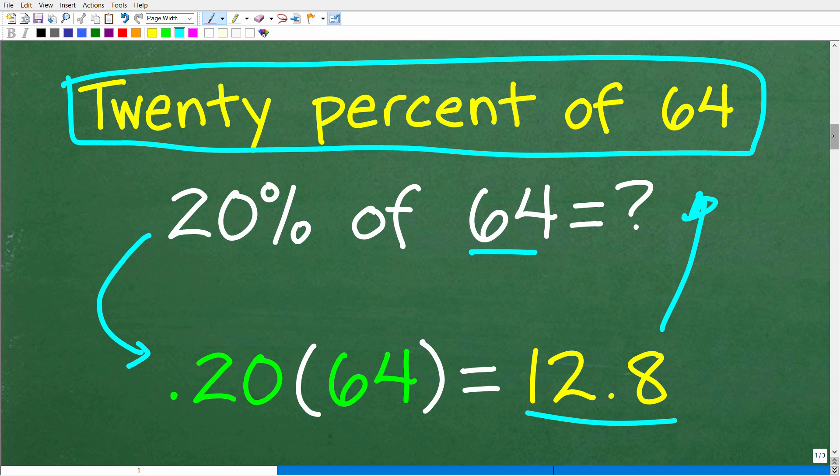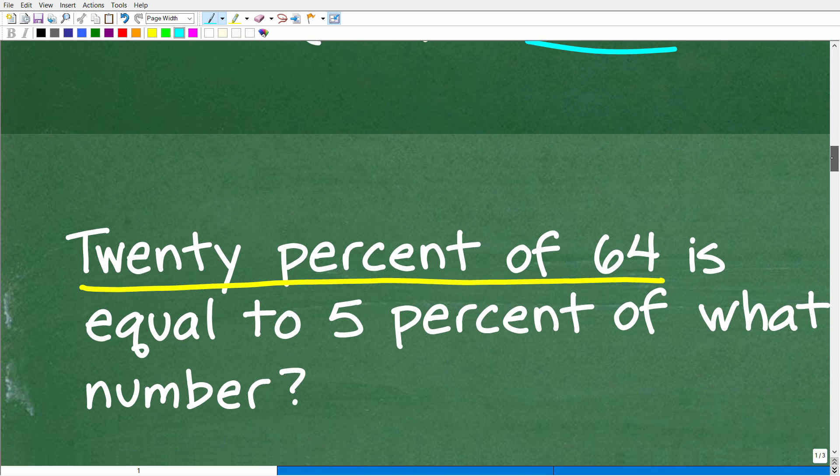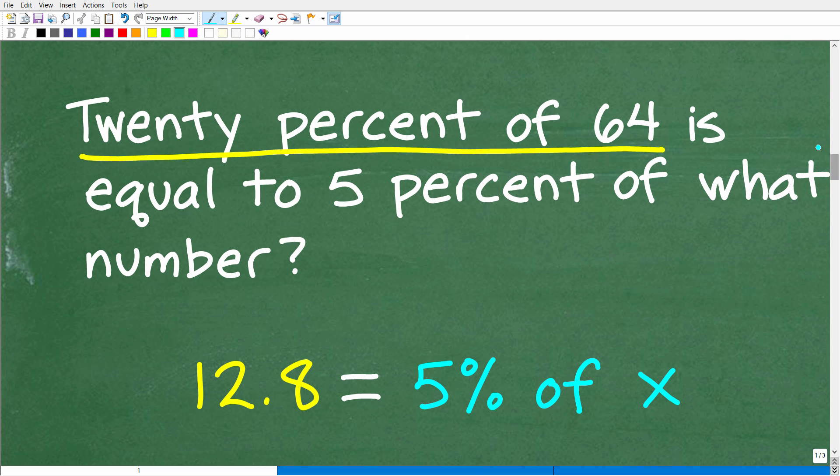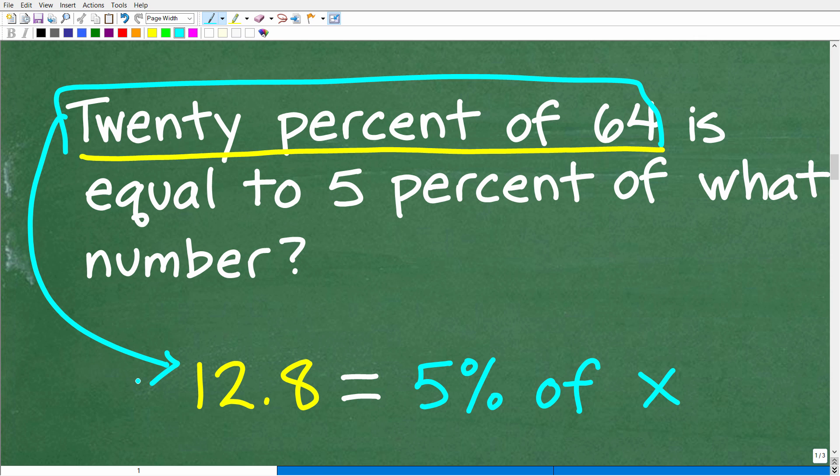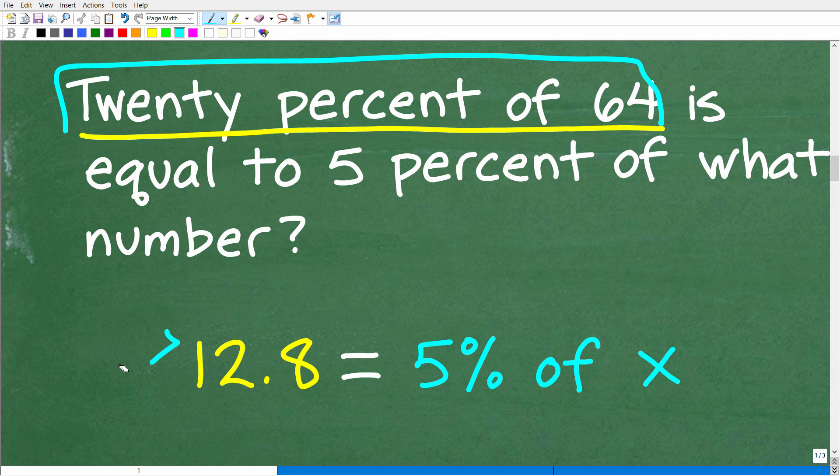So this part of the problem, 20% of 64, we can just get rid of that and put in 12.8. We're going to approach this problem one segment at a time. Now let's take a look at the problem. We have 20% of 64 and now we know that is 12.8. So we can rewrite this problem: 12.8 is equal to 5% of what number? You can see here that I have some things written down. I'm going to give you a chance to take a look at what I just wrote and see if you can figure out why I wrote this. I'm giving you the answer, but can you reverse engineer and figure out why I did this?